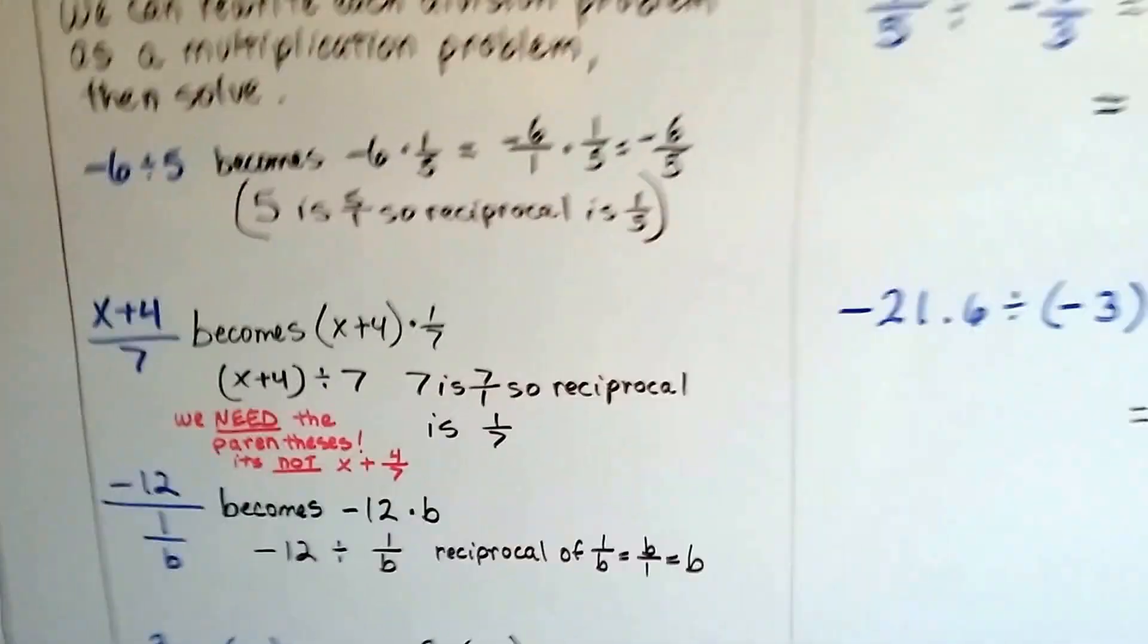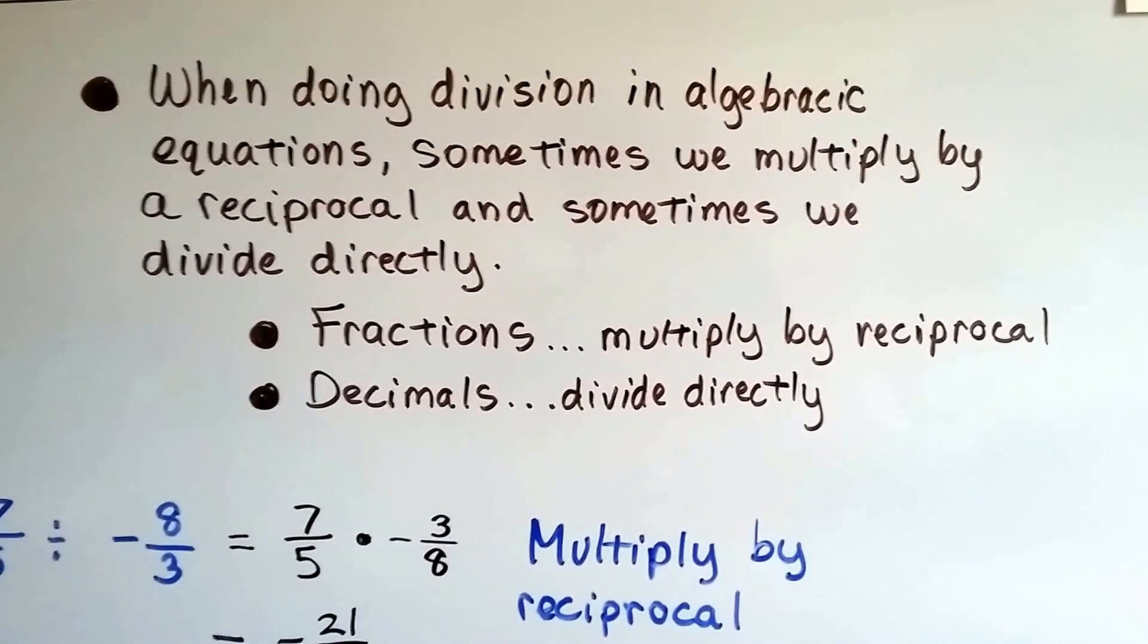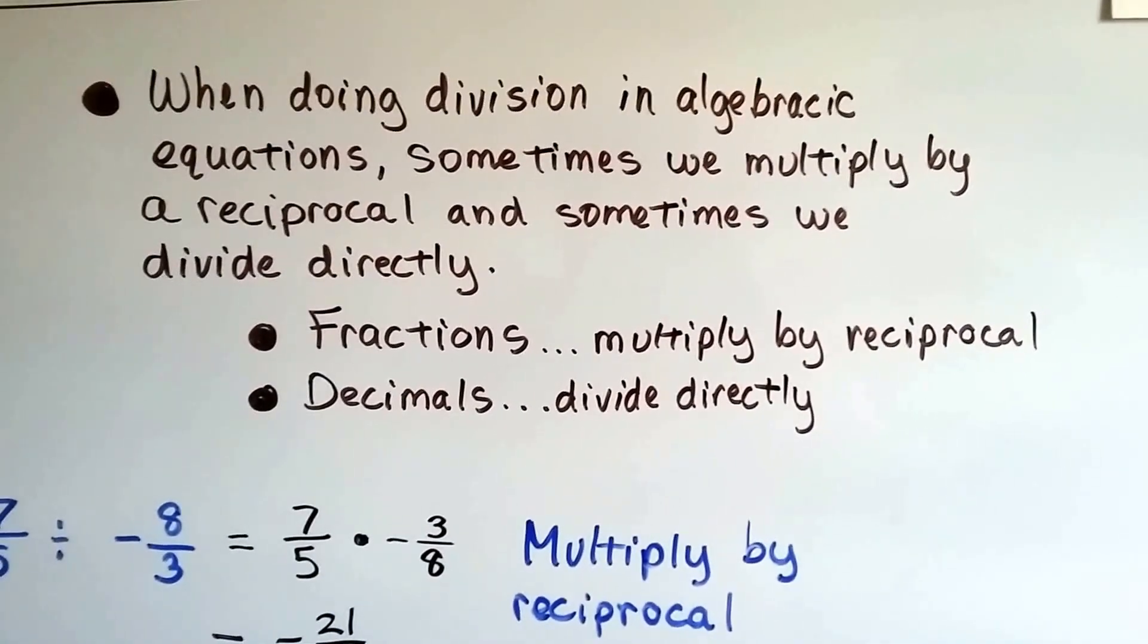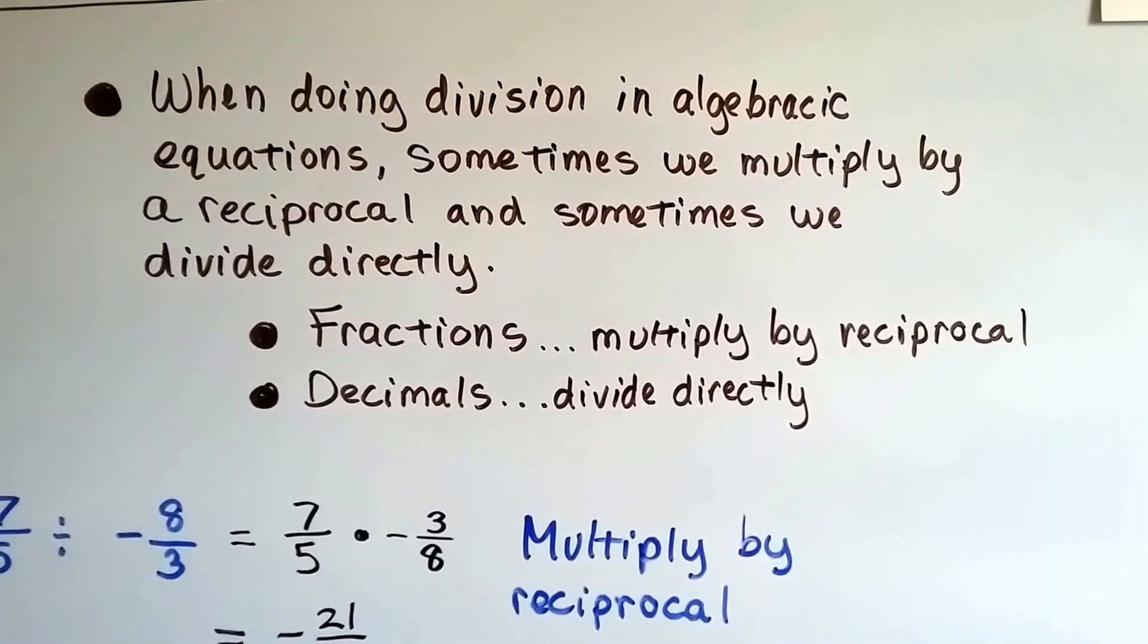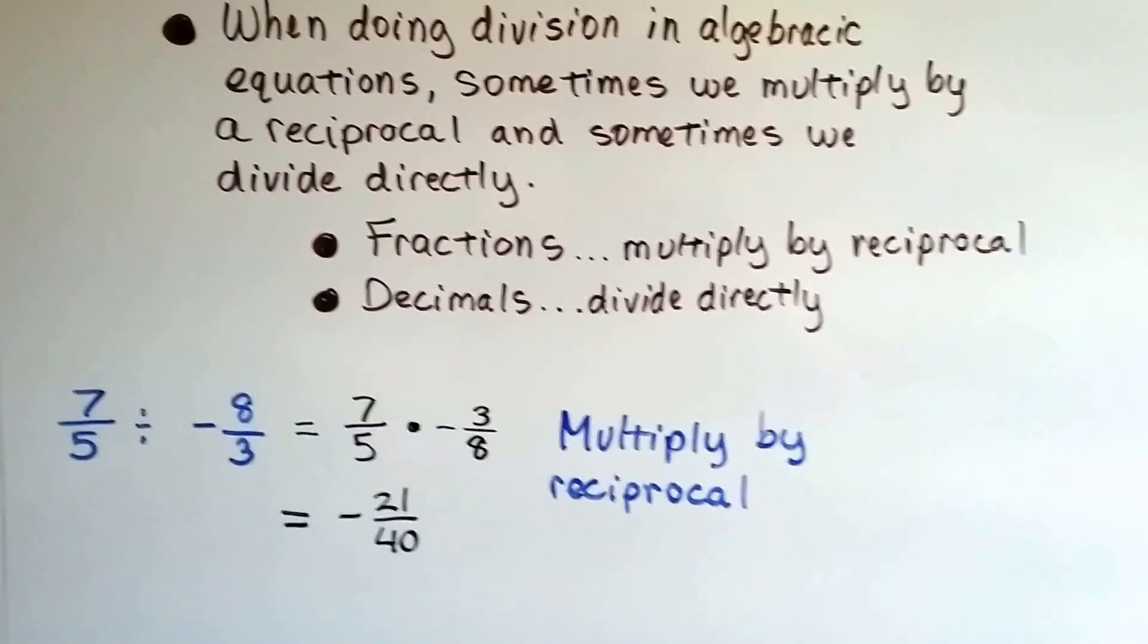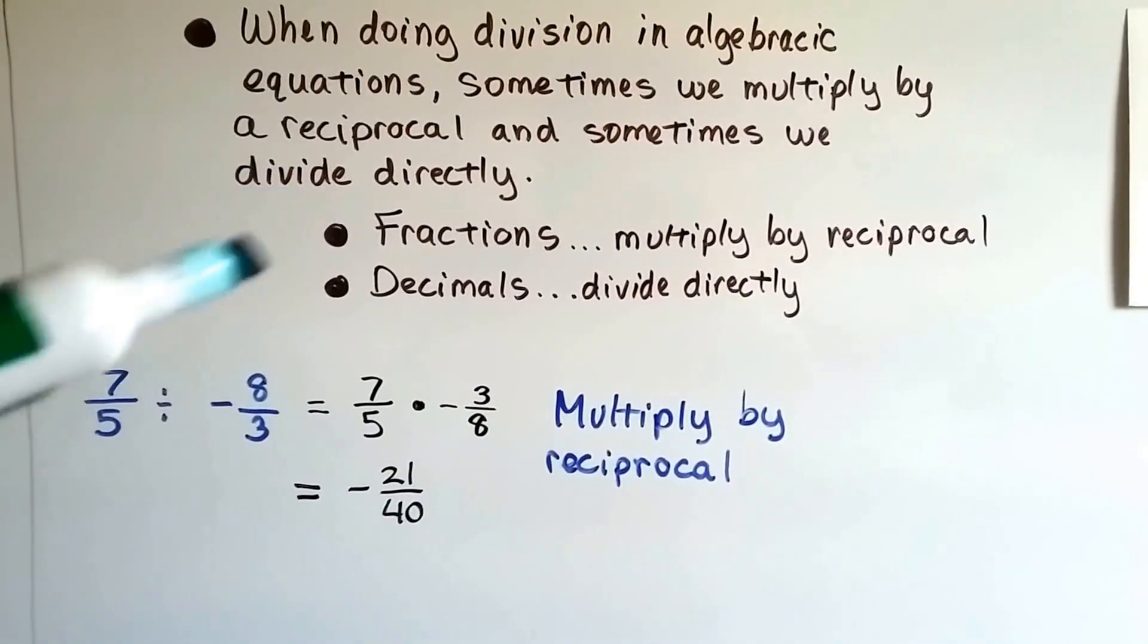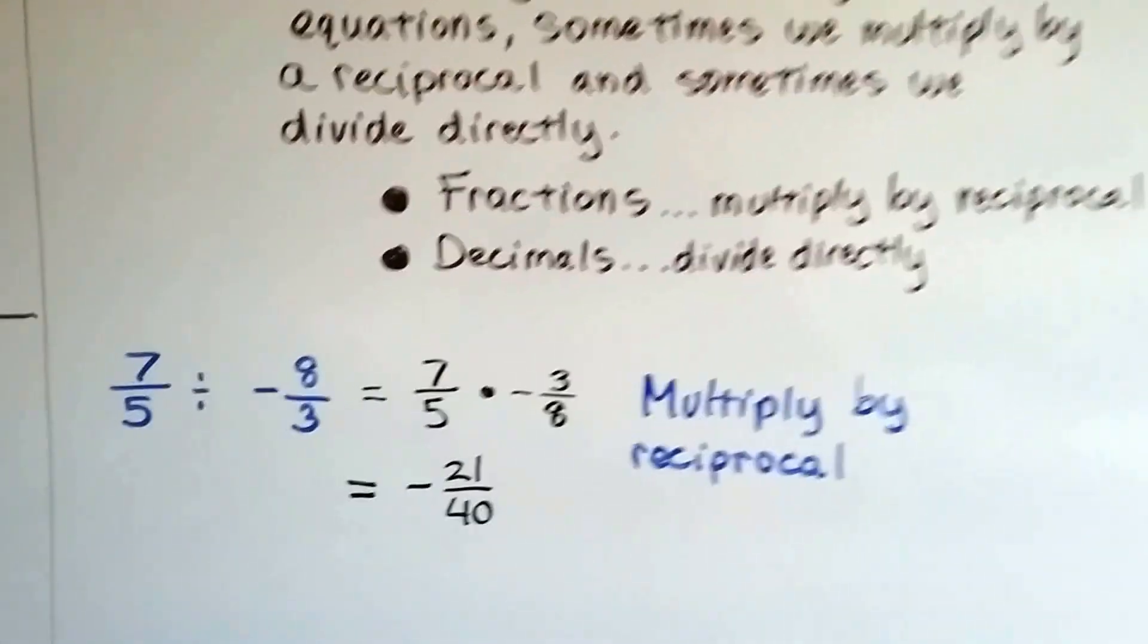So when we're doing division in algebraic equations, sometimes we multiply a reciprocal by a reciprocal and sometimes we divide directly. When we have fractions, we multiply by a reciprocal. When we have decimals, we divide directly. By multiplying by the reciprocal with fractions, it's easier for us.